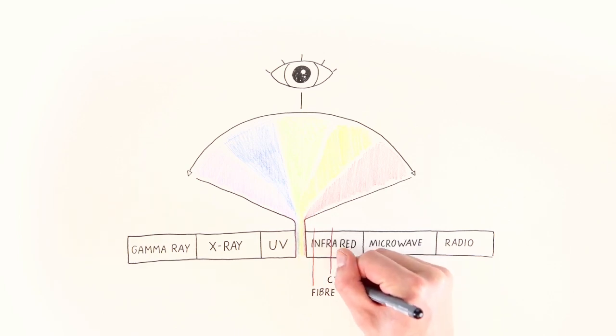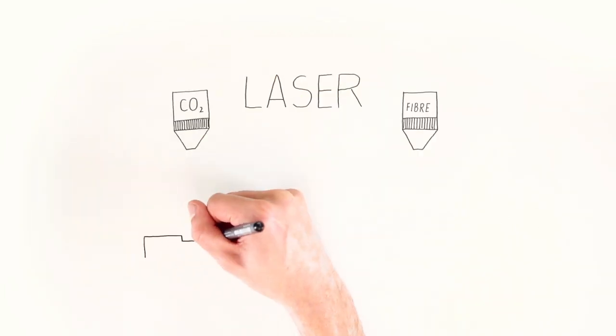Trotec CO2 lasers have a wavelength of 10.6 micrometers and are about here in the spectrum. Let's look at this in comparison.